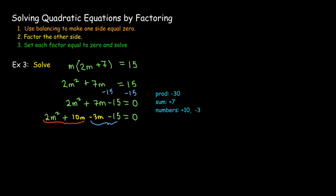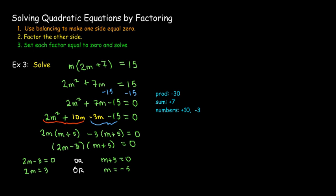The first pair has a common factor of 2m, and the second pair has a common factor of negative 3. And then inside parentheses, I have m plus 5. So my second factor will be 2m minus 3. So one of those two factors has to equal zero. So either I have 2m minus 3 equals zero, or m plus 5 equals zero. If 2m minus 3 equals zero, then 2m equals 3, and that would mean m equals 3 halves.